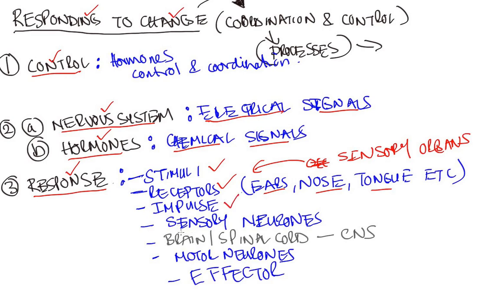It travels through the sensory neurons to the brain and spinal cord combination, which is basically the CNS or central nervous system. Then the signal that's generated by the central nervous system as a response has to reach the effector, and the effector gets that message through the motor neurons.